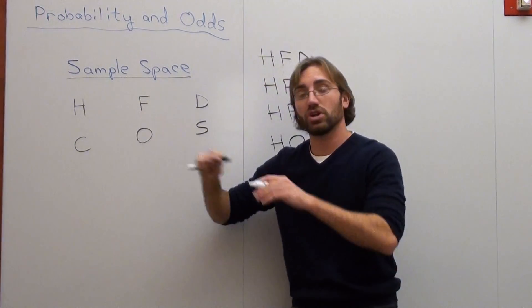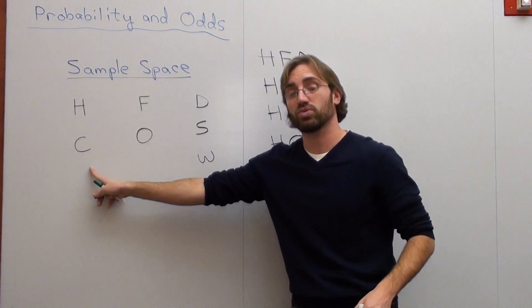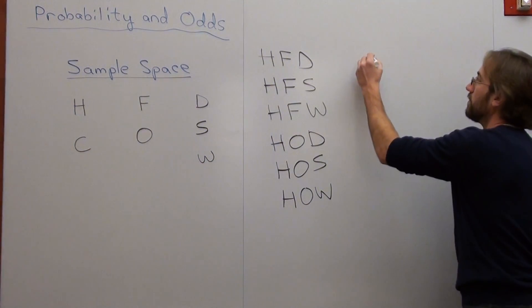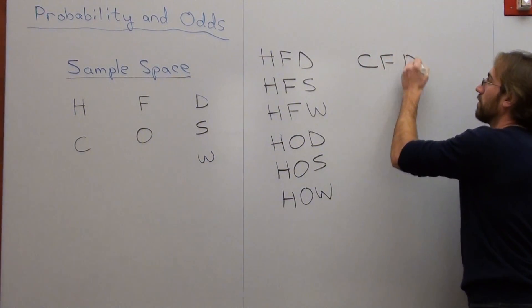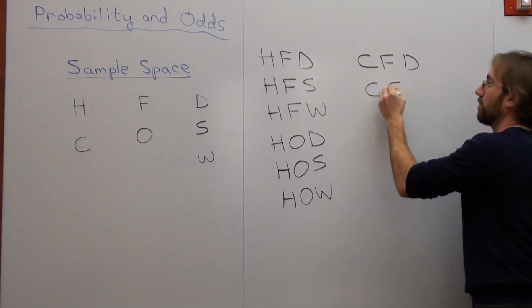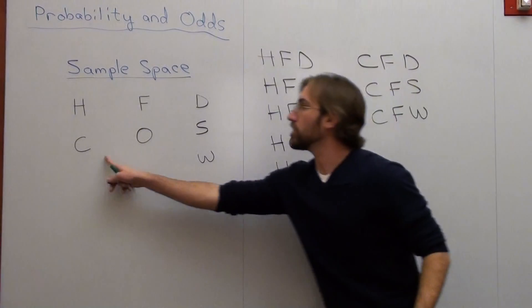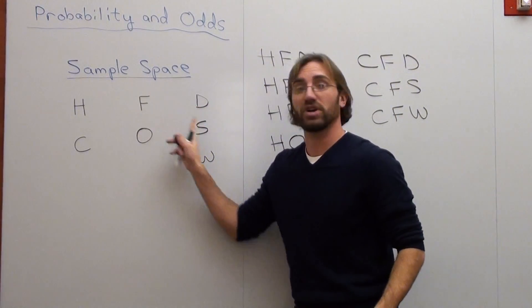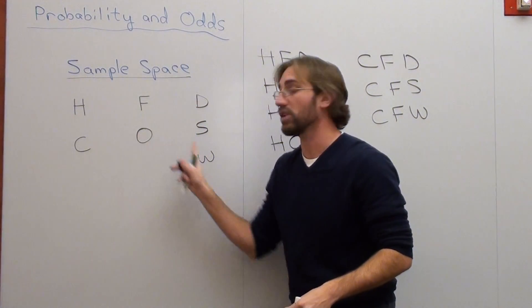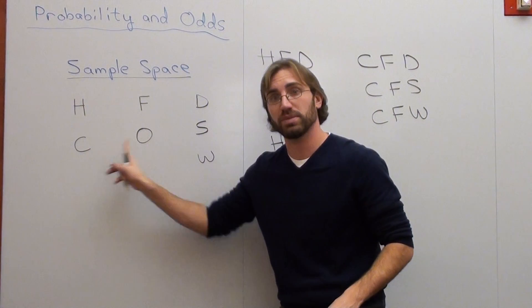Now, we've already exhausted everything that we can do with hamburgers. Now let's work with cheeseburgers. Cheeseburger, fries, diet coke. Cheeseburger, fries, shake. Cheeseburger, fries, water. Now let's work with cheeseburger and onion rings.